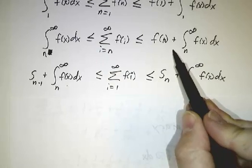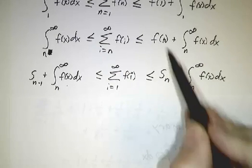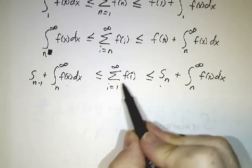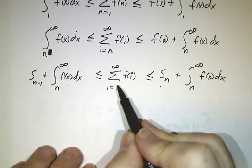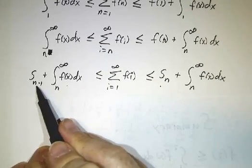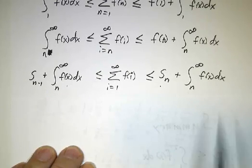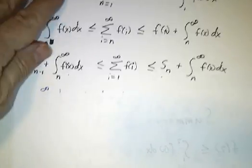If you add the first n minus 1 terms over here, we add that to the nth term and you get sn. So we've got that the total sum is somewhere in between the first n minus 1 terms plus this integral and the first n terms plus this integral. So for example...